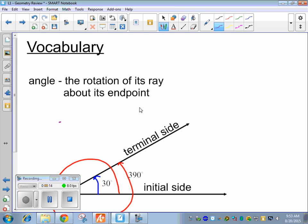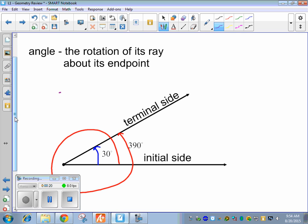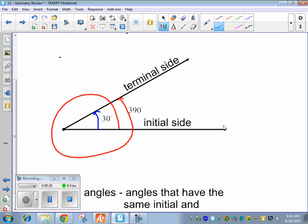We have a little extra vocabulary at the beginning. So an angle is the rotation of its ray about its endpoint. So right here we have an angle, the initial side down here and the terminal side here.